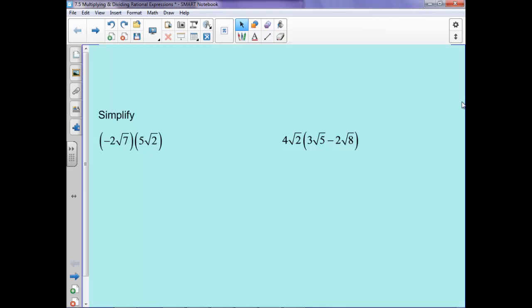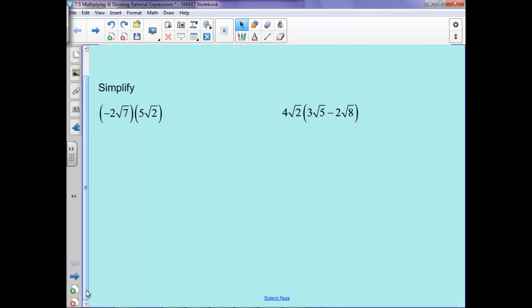So multiplication and division are actually going to work the same way as it did before, when we had like 2x times 3x. So if you remember when we had 2x times 3x, we did 2 times 3 is 6, and then x times x is x squared. Same idea.